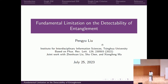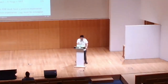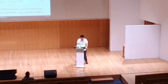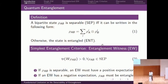We begin with a brief introduction to quantum entanglement. In the context of bipartite systems, a state rho is said to be separable if it can be expressed as the separable form — a summation of rho_A tensor rho_B. Otherwise, it is entangled. We use SEP and ENT to denote the set of separable states and entangled states. Entanglement cannot be directly measured, and we need some clever methods to determine whether a state is entangled or not. This is called entanglement detection, and the method is called an entanglement detection criterion or protocol.